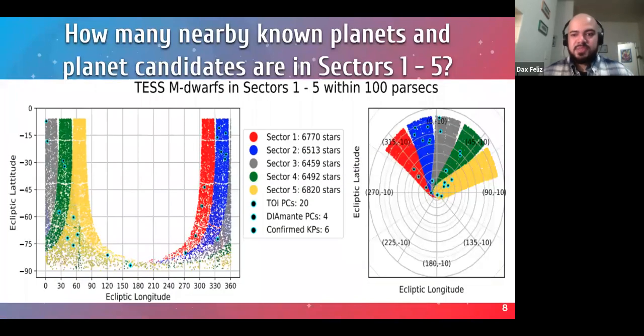So in terms of spatial distribution, these are how these five sectors are distributed. And within these five sectors, there are about 30 planet candidates, which consists of TOI's candidates from the Diamante catalog, as well as confirmed known planets that have measured masses. And these are marked in these black points with light blue outlines. Many of these candidates are found near ecliptic longitudes or ecliptic latitudes of minus 90. And this is where TESS has a continuous viewing zone, which is observed for almost a year straight.